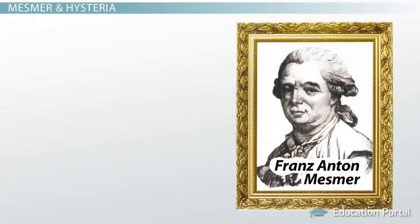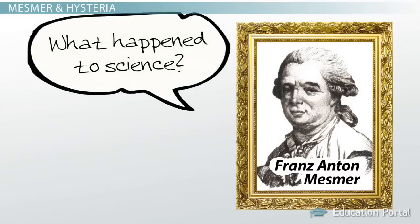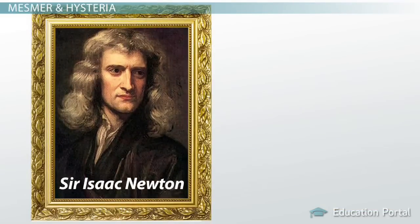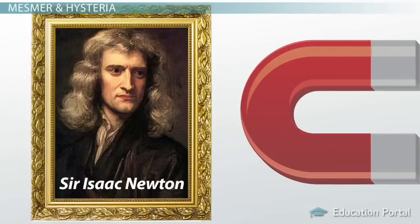In the 18th century though, a doctor named Franz Anton Mesmer attempted to treat mental illness from a scientific point of view. Mesmer took the work of Sir Isaac Newton, which focused on invisible forces like gravity and magnetism, and applied them to abnormal psychology.